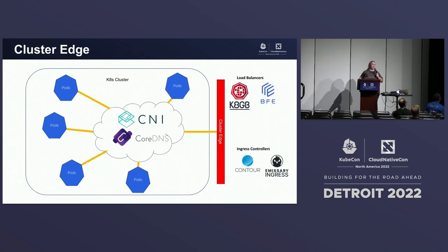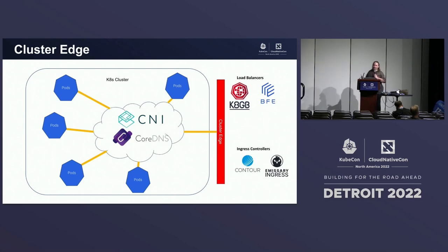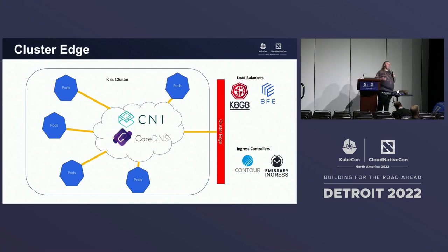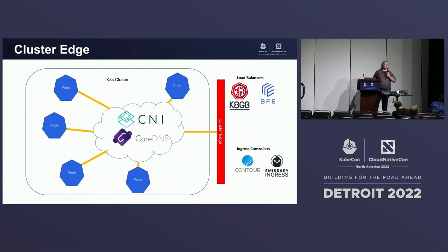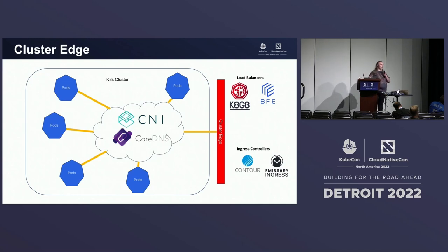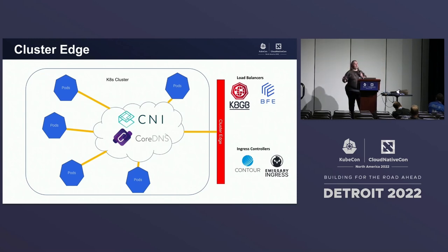That brings us to what happens at the edge of the cluster. There are a few things in Kubernetes that involve the cluster edge — typically load balancers and ingress controllers. Projects like KHGP and BFE provide load balancers that deal with traffic coming in primarily at layer 4, the transport layer, taking incoming TCP or UDP streams and load balancing them to some service inside your cluster. If you lift this up to layer 7 to route on HTTP, you're typically dealing with ingress controllers — examples include Contour and Emissary Ingress. This entire Kubernetes-centric model is highly focused on a single cluster.